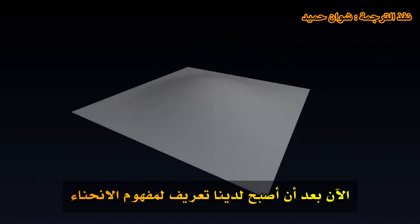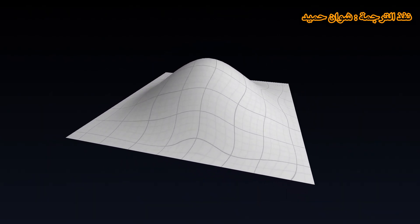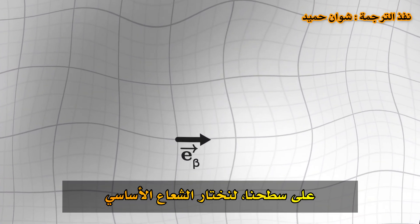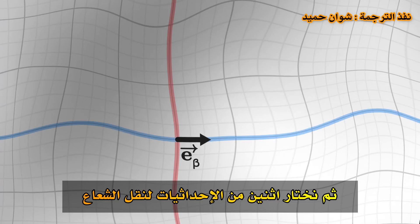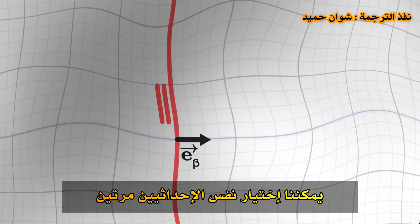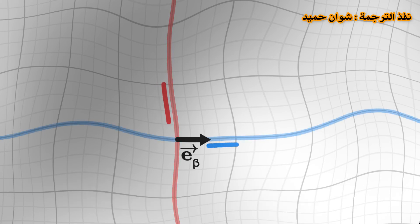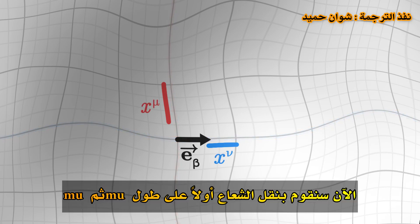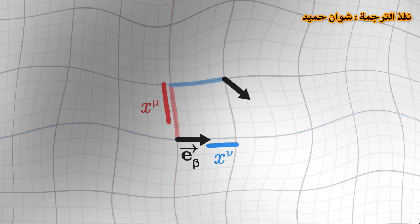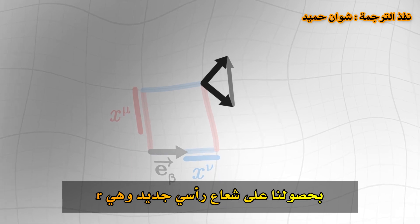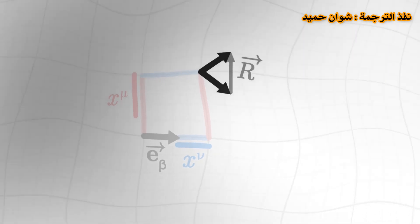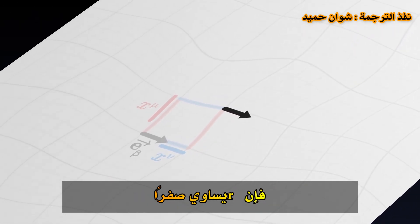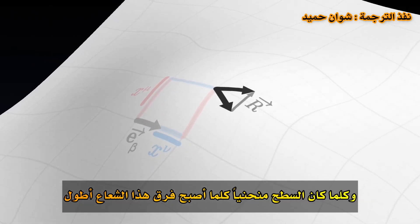Now that we have a definition for the concept of curvature, we can express it mathematically. On our surface, let's choose a basis vector. Then we choose two coordinates to transport the vector — we can choose the same coordinate twice, or more interestingly, two different coordinates. We denote them mu and nu. Now transport the vector first along mu then nu, and secondly along nu then mu. We thus obtain two images of the initial vector. Performing the difference between these two images, we get a new vector, capital R. If the surface is flat without curvature, R is zero. And the more the surface is curved, the longer this difference vector becomes.